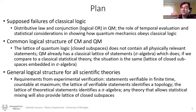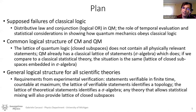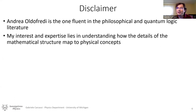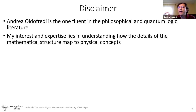First, we look at the supposed failure of classical logic in quantum mechanics, and we will see how temporal evaluation and statistical considerations make it that quantum mechanics actually obeys classical logic. Second, we go more into the nuts and bolts and see the mathematical structure, and we see that the lattice of quantum logic does not contain all physically relevant statements. Third, we compare classical statistical theory and find a parallel that mathematically works the same. A little disclaimer: Andrea is the one fluent in all the philosophical and quantum logic literature; my expertise really lies in understanding how the details of the mathematical structure map to physical concepts.